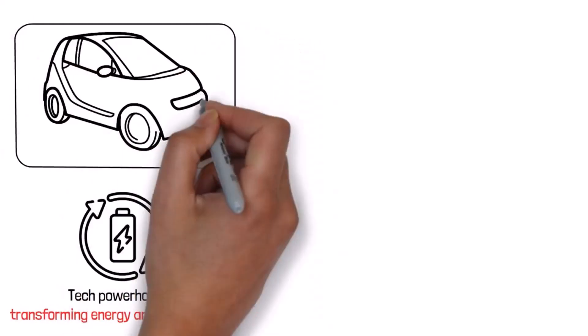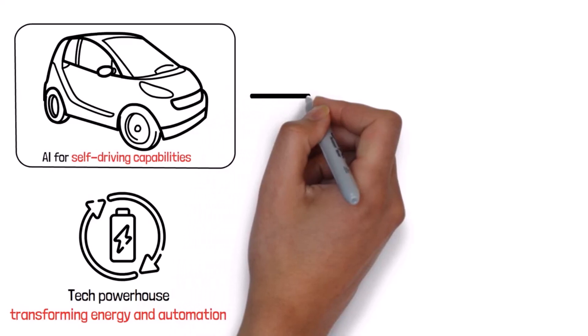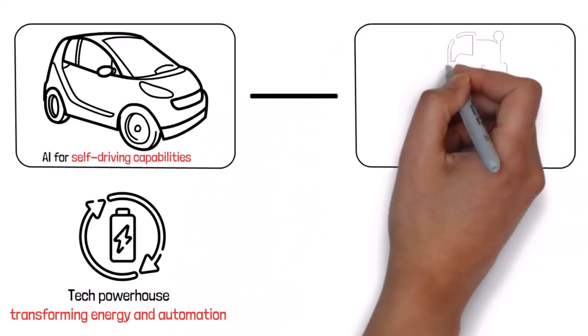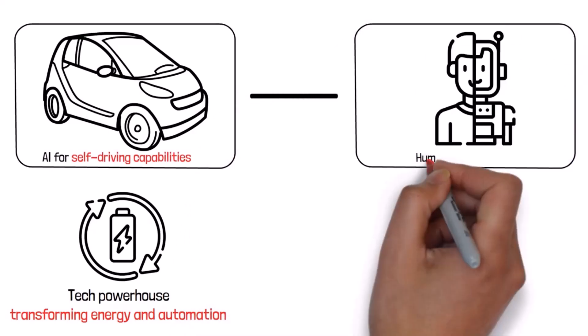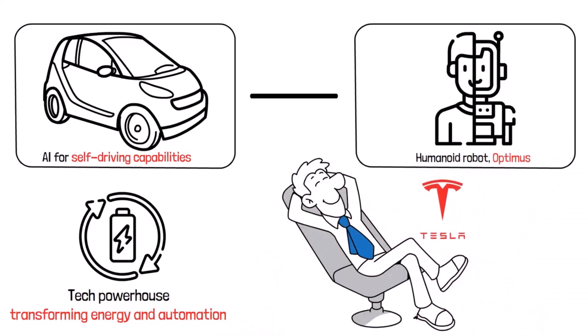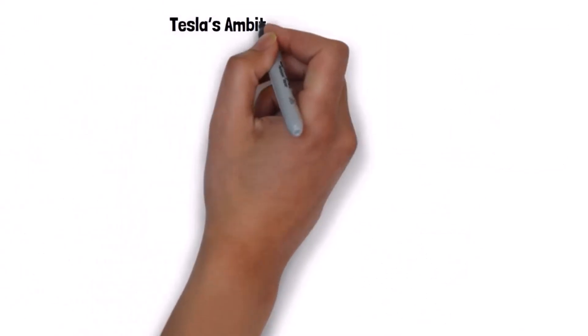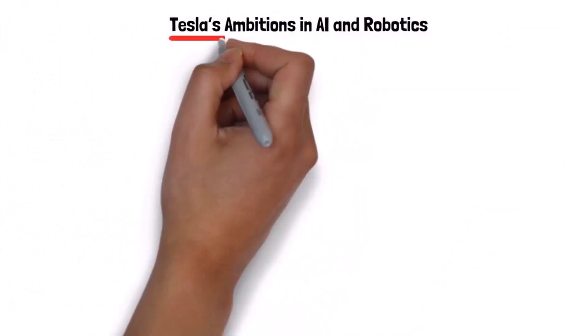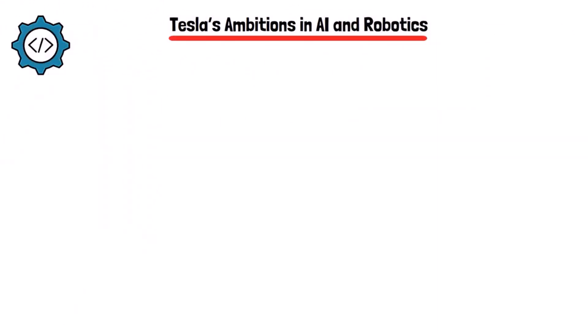Tesla's innovations go beyond cars to include cutting-edge AI for self-driving capabilities and ambitious projects like the humanoid robot Optimus. This makes Tesla a front-runner in multiple high-growth industries.